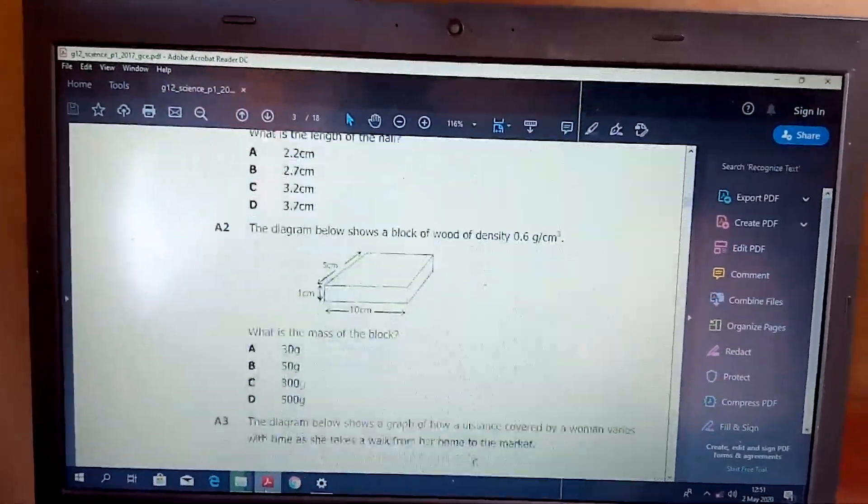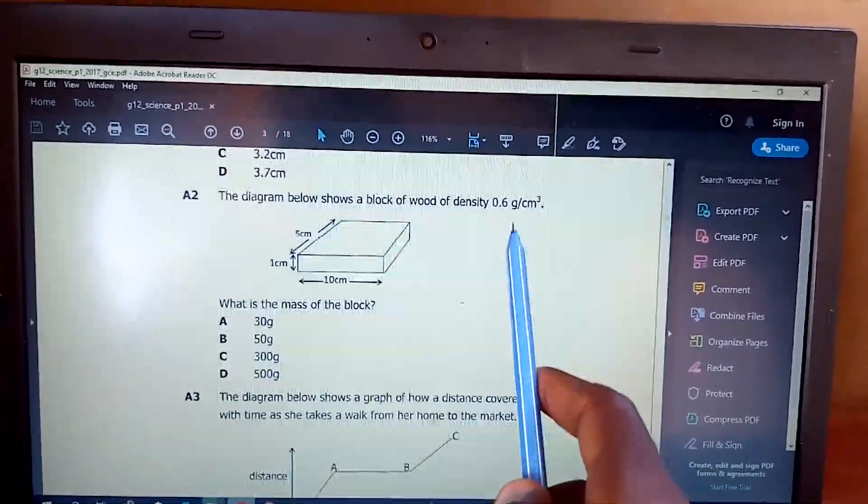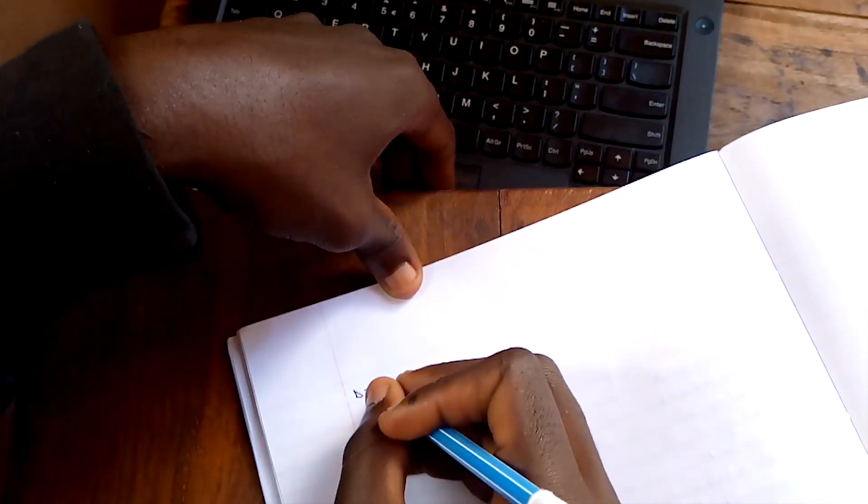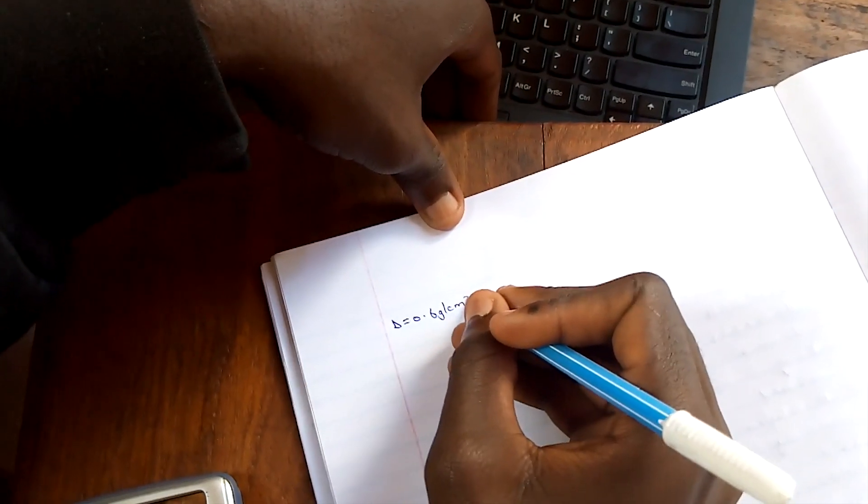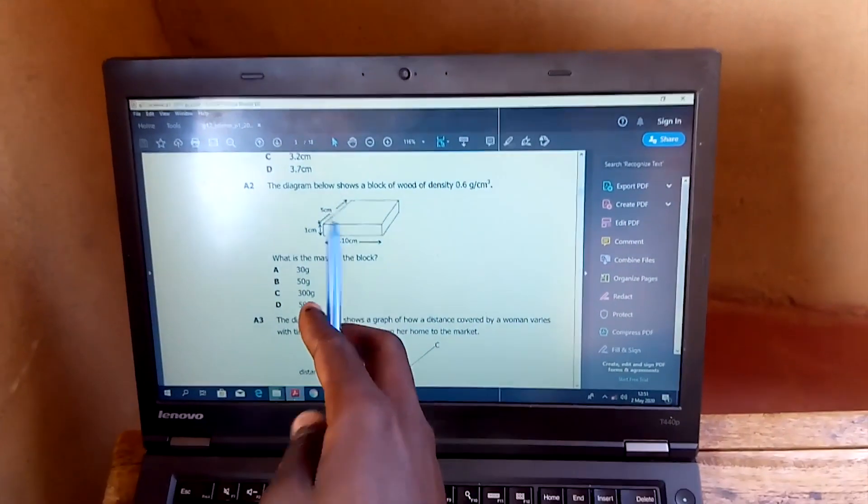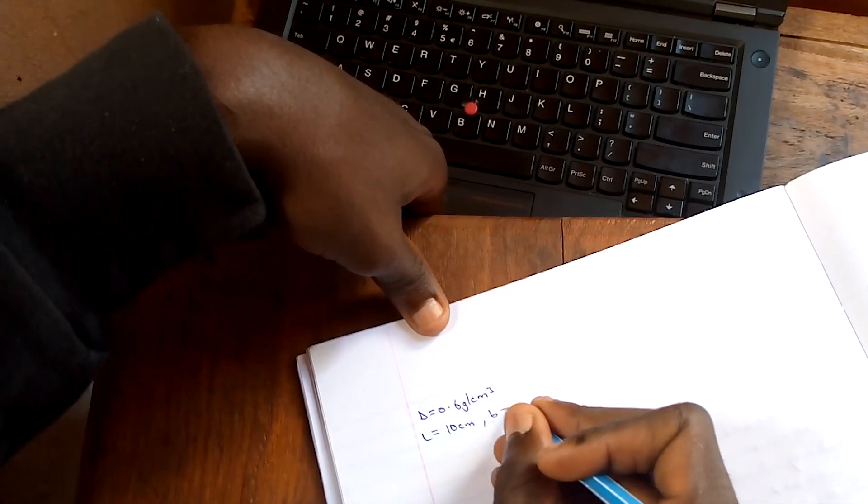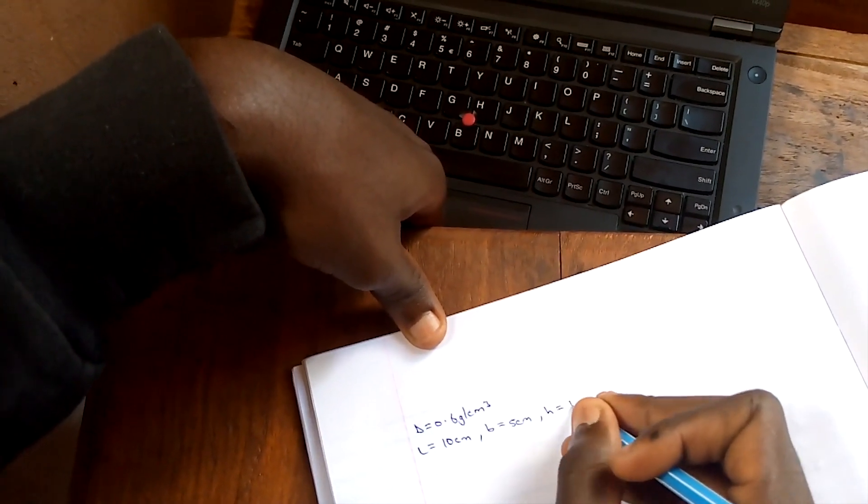The diagram below shows a block of wood of density 0.6 grams per cubic centimeter. And then the volume, they've given us the dimensions of the block here. The length is 10 cm, the breadth is 5 cm, and the height is 1 cm.